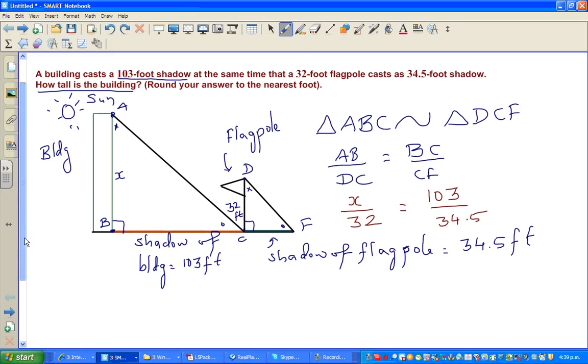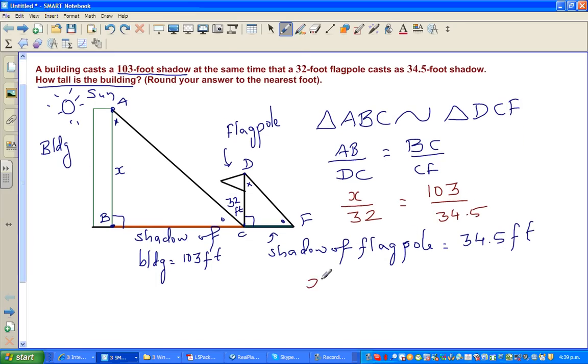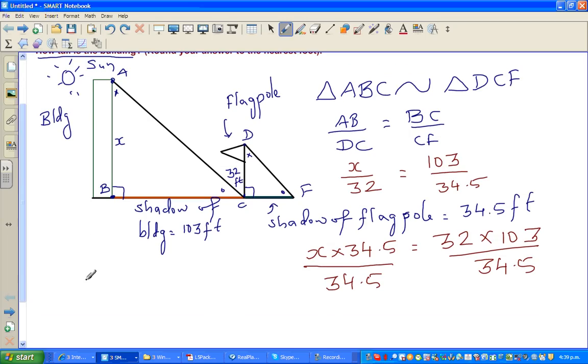Now I can cross multiply. x times 34.5 equals 32 times 103. I'm going to divide both sides by 34.5, so x equals 32 times 103 divided by 34.5.